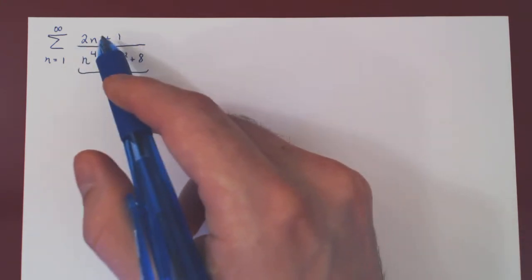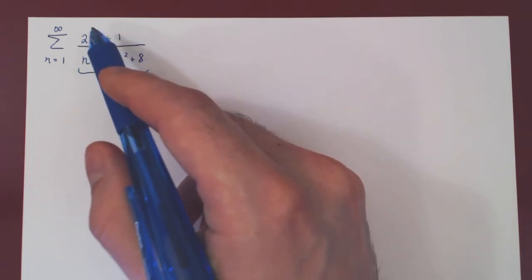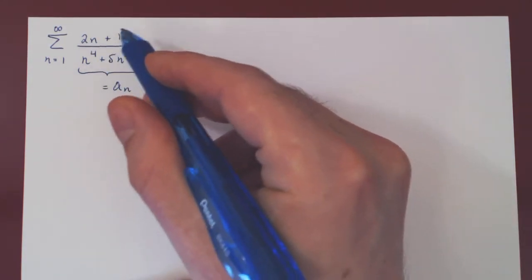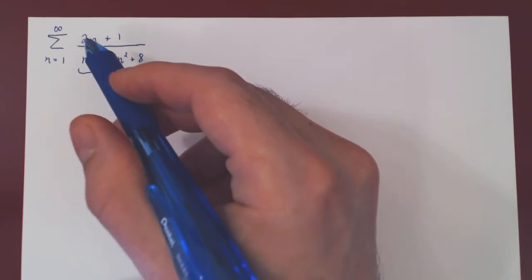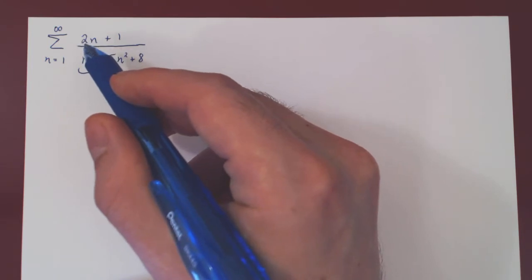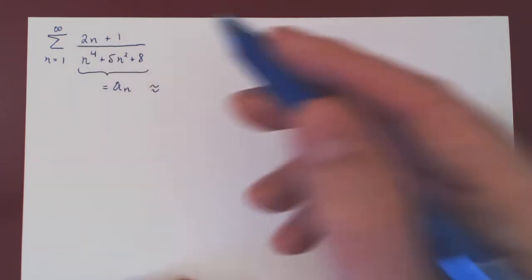So let's see. Look at your numerator. When N is large, 2N is way bigger than 1. So the dominant term on the numerator is 2N, but we can always ignore constant multiples. So we can take simply N.